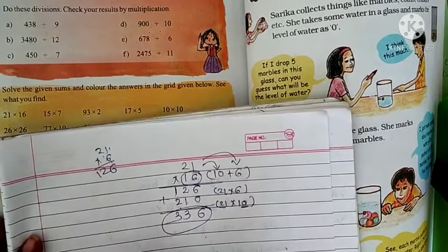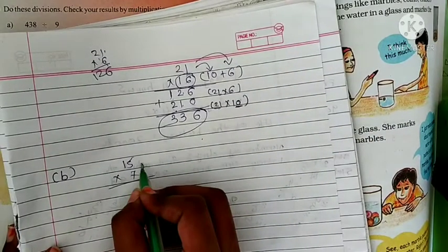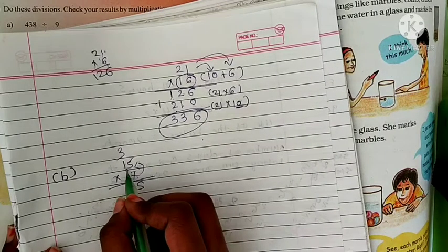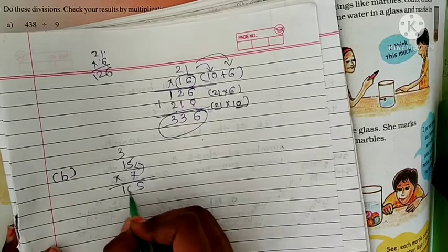Next, 21 times 57. 7 times 5 is 35, 3 carry. 7 times 1 is 7, plus 7 is 14, plus 3 is 17. 8, 9, and 10. 105.